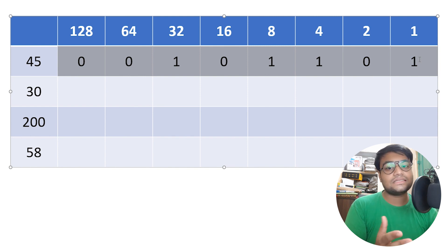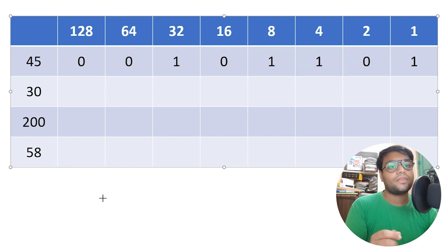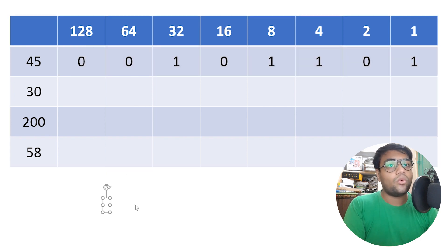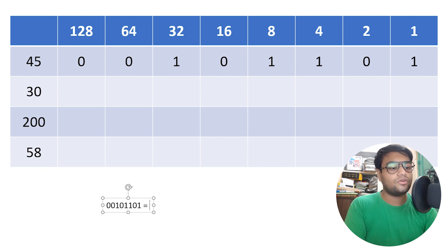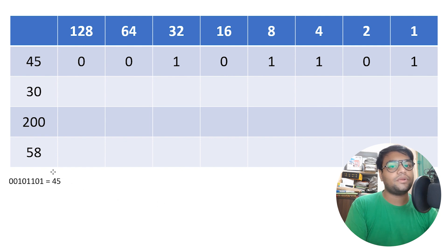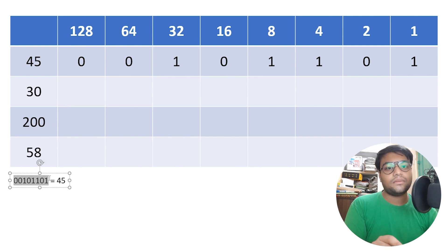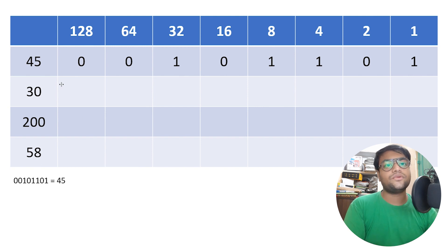So 00101101 is the binary equivalent of the decimal number 45.